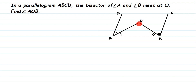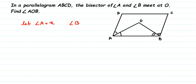A bisector divides the angle into two equal parts. So you can see one line here and here, which means the two angles are equal. Similarly, this is the complete angle B — this is one angle and this is one angle, two separate angles, but the whole is angle B. Let us assume that angle A is X — the whole angle A.